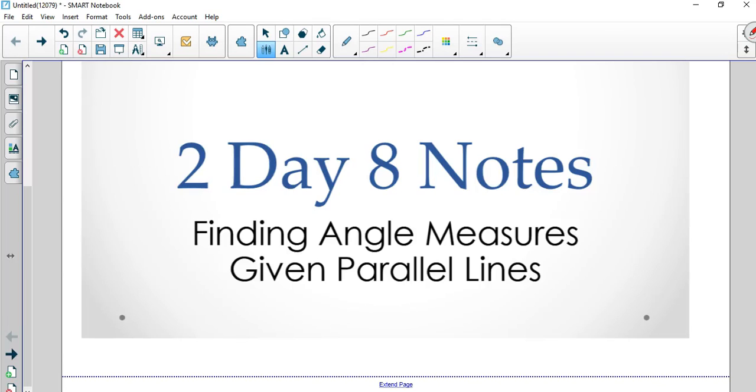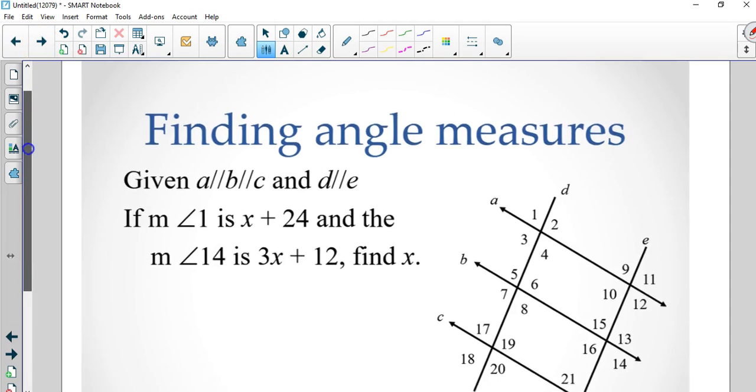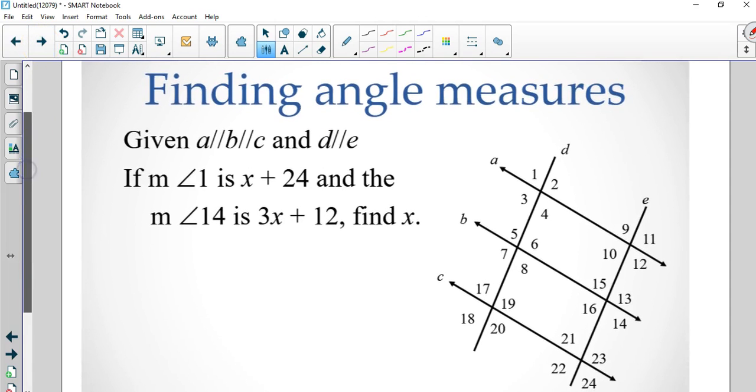Okay, Unit 2 Day 8 notes, finding angle measures given parallel lines. We're looking at the first one in our notes and it says given that a, b, and c are all parallel and d and e are parallel.